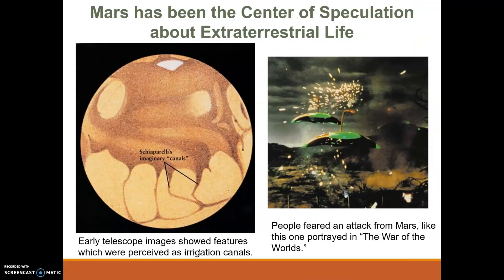Mars has been the center of speculation for extraterrestrial life, which I'm sure you have all had theories on. Early telescope images showed features that were perceived as irrigation canals, believed to be used by aliens or extraterrestrial life. People really feared an attack from Mars. Since then, with better technology, we've been able to see the surface of Mars more clearly.